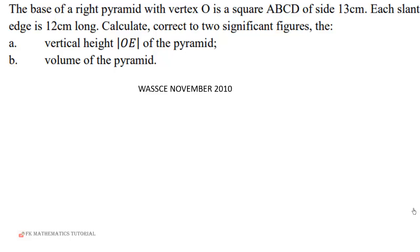Now let's begin solving. The base of a right pyramid with vertex O is a square ABCD of side 13 centimeters. Each slant edge is 12 centimeters long.